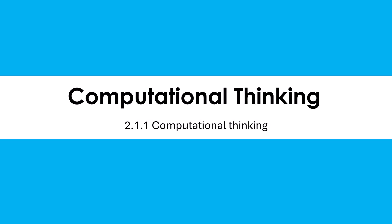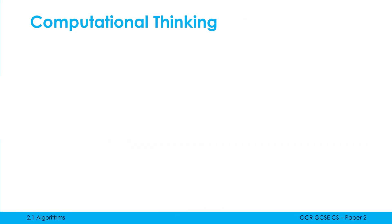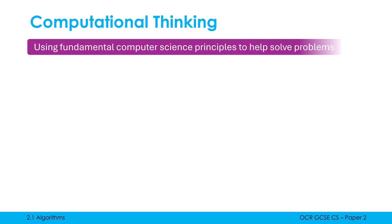Let's start by defining the term computational thinking, which is a term you will see a million and one definitions for because it's quite a difficult term to pin down. This is my attempt to define it: computational thinking is where we use fundamental computer science principles to help solve problems. What exactly those fundamental principles are will depend on who you ask, but we're going to look at three which are relevant to OCR paper two.